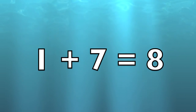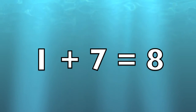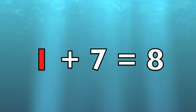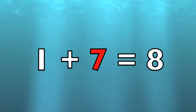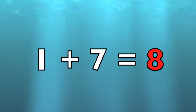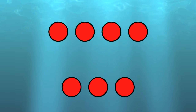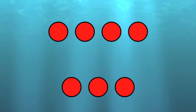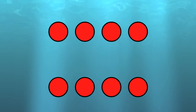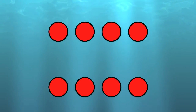One plus seven equals eight. One circle plus seven circles equals eight circles.